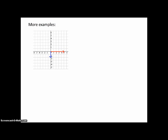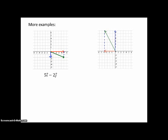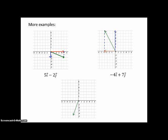More examples. What's this one? Well, that one would be 5i minus 2j. Those numbers are not in the right place on the y-axis. You have to look at the blocks. And this one is negative 4i plus 7j. And this one is negative 2i minus 5j. Sorry about those numbers being off.